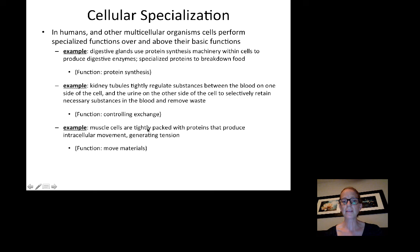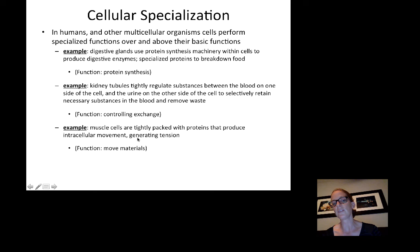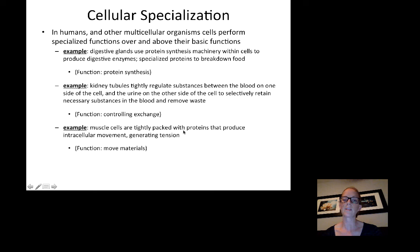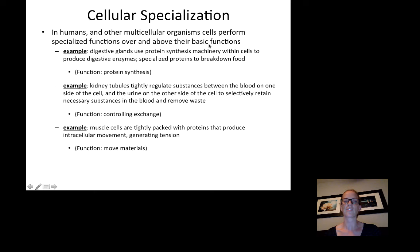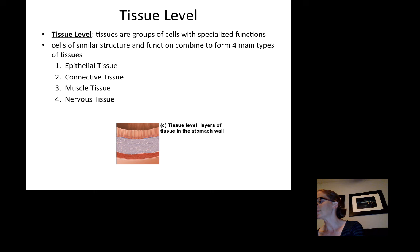Muscle cells also specialize the basic function of moving materials. They contain densely packed specialized proteins — actin and myosin — so dense that striations or stripes are visible inside the cell. These proteins produce intracellular movement, generating tension and contraction. They move so much and are so tightly packed that they produce movement of the entire cell, representing a major specialization beyond basic cellular functions.